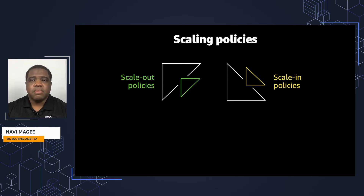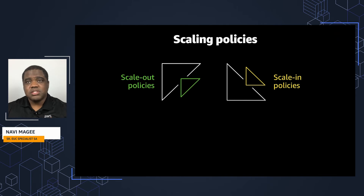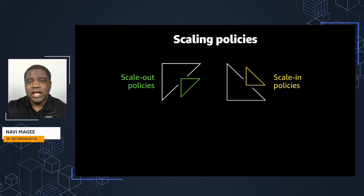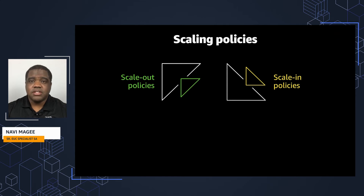Now let's take a look at scaling policies. There are scale-out policies and scale-in policies. Scaling policies determine the size of a fleet — you can automatically increase or decrease the size of a fleet with these policies. Key counters to consider include the minimum capacity for the fleet and the maximum capacity. The minimum capacity sets the minimum number of instances readily available for your users at any given time, and the maximum sets how many instances the fleet is allowed to scale out to. Other important counters include actual capacity, capacity utilization, and desired capacity.